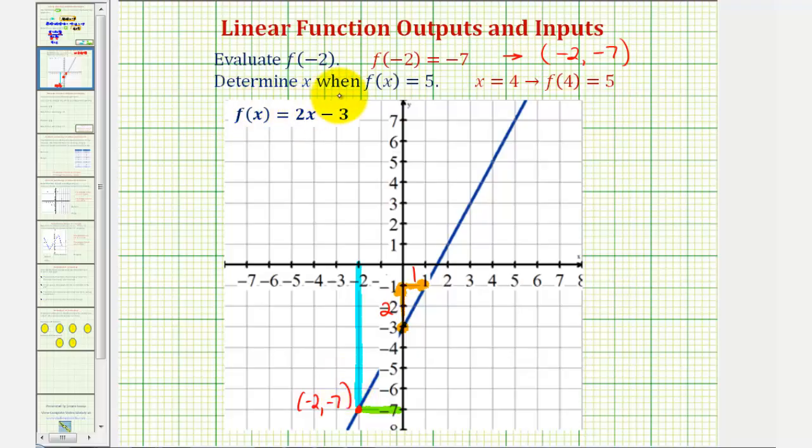And then the second part we're asked to find x when f of x equals five. Well notice now if we find the point on the graph where y equals five, which is our function value, the input would have to be x equals four which is what we found algebraically. So this corresponds to the point with an x coordinate of four and a y coordinate of five. I hope you found this helpful.